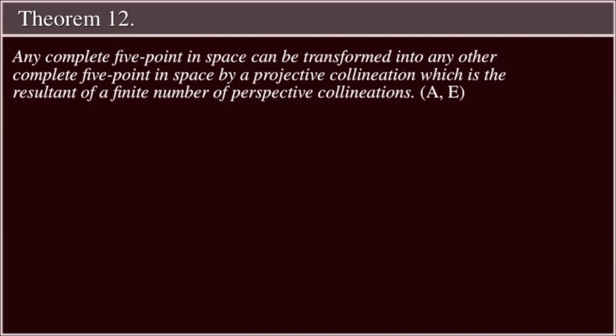Theorem 12: Any complete five-point in space can be transformed into any other complete five-point in space by a projective collineation, which is the resultant of a finite number of perspective collineations. Assumptions A and E.